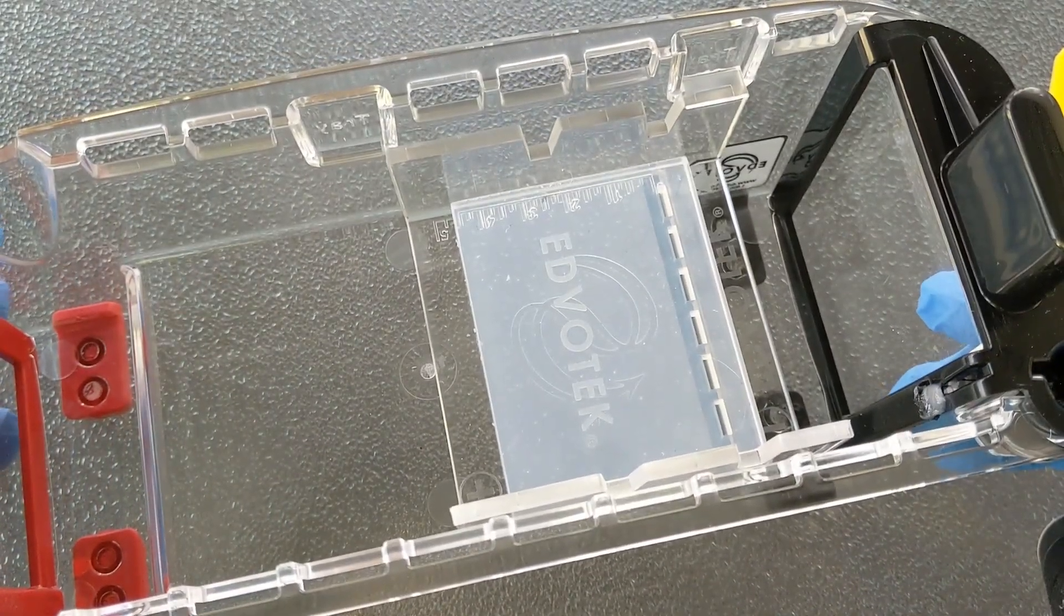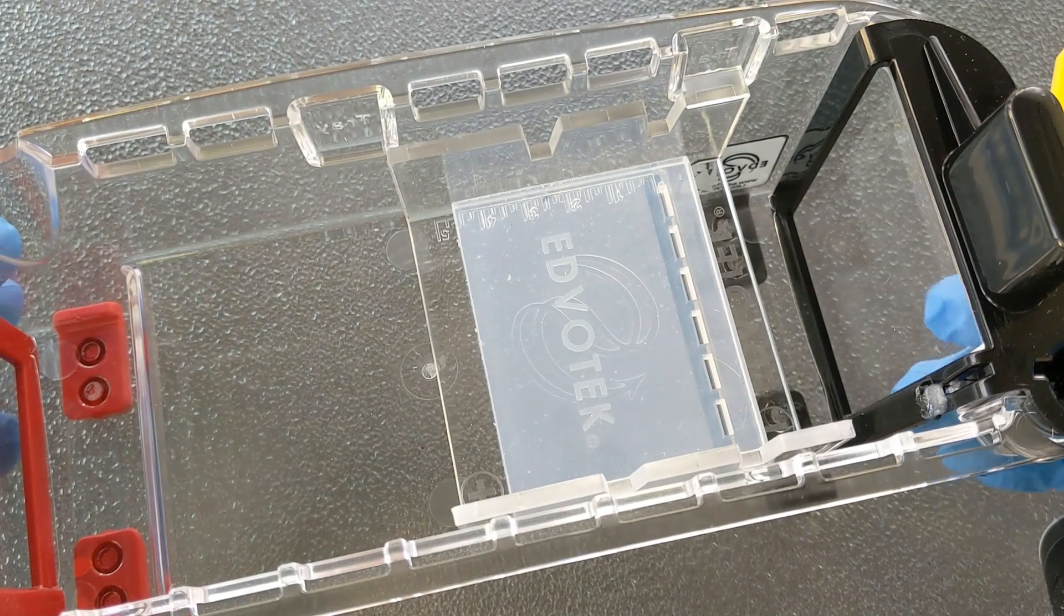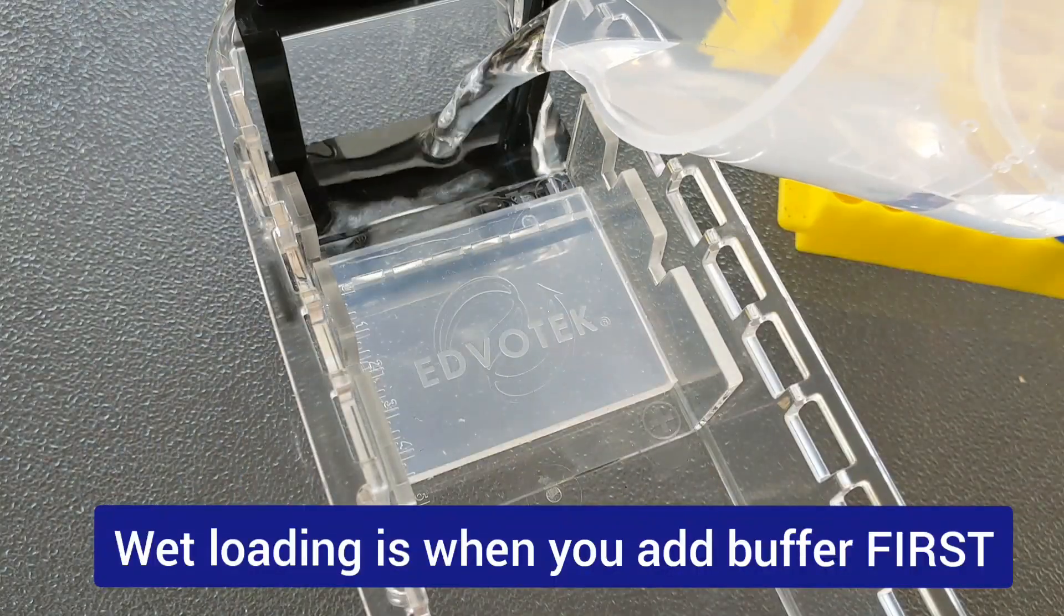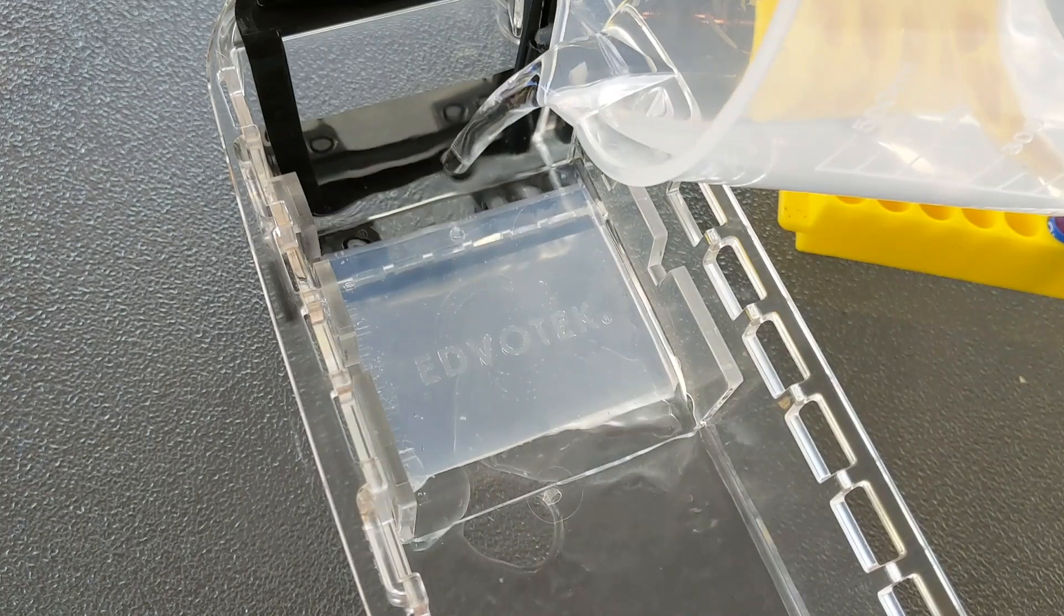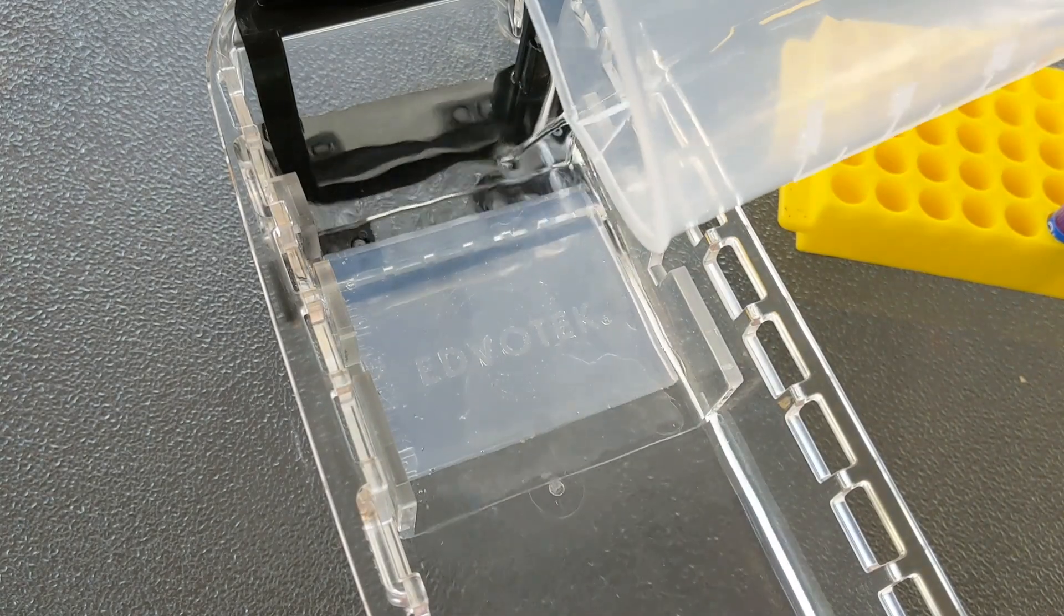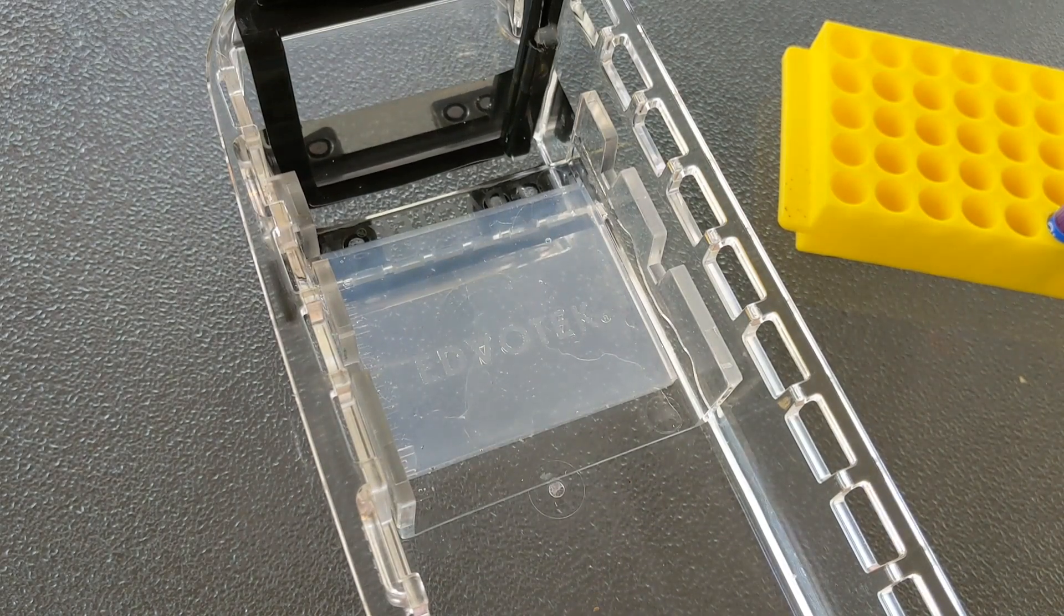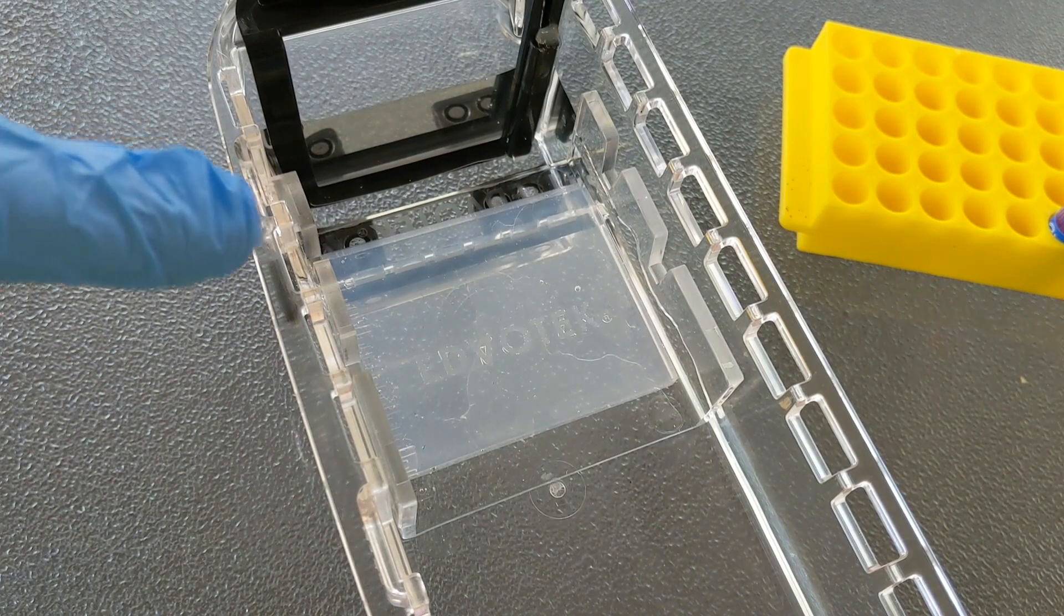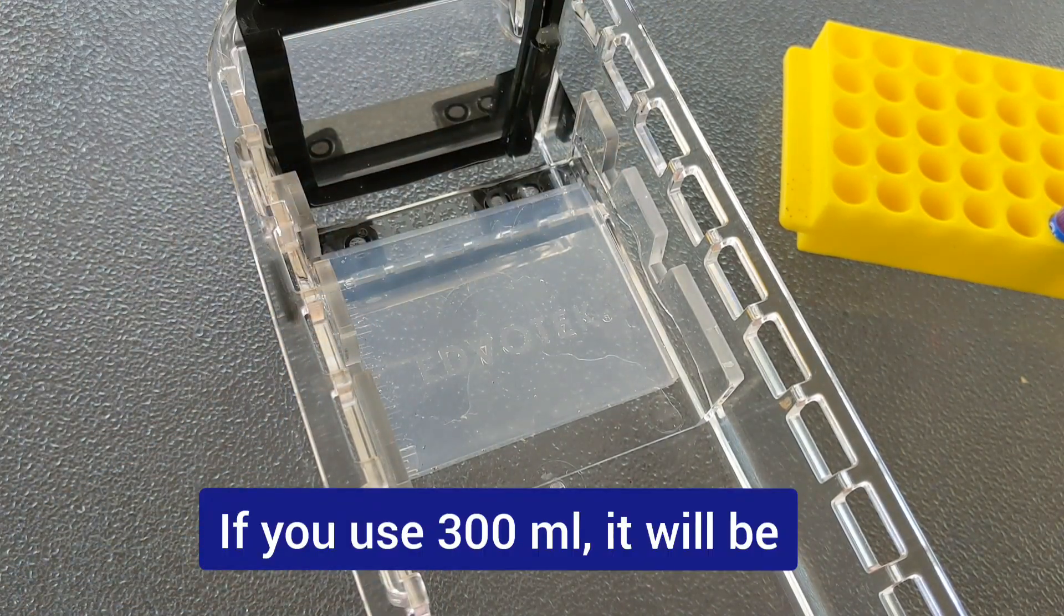I'm going to demonstrate wet loading first because wet loading is the method of DNA loading that I learned first. With wet load, you go ahead and add your buffer, so as soon as your gel is in there, you pour your buffer. It doesn't matter which side you pour it into, it's like a swimming pool, it's going to fully fill your chamber. And it's really important to make sure that your gel is immersed in the buffer and that the wells are totally covered.